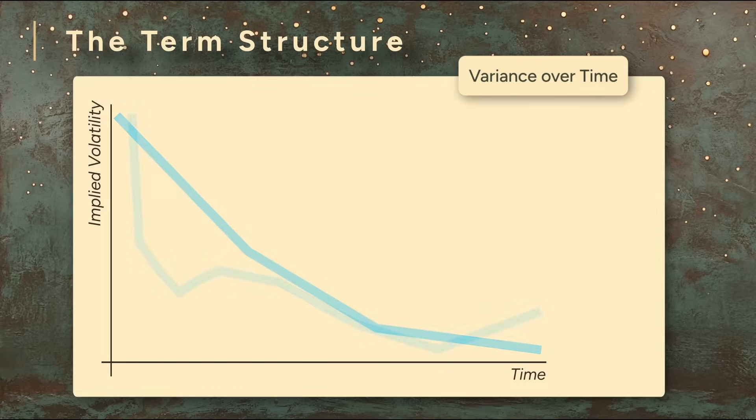And it's not always just a smooth slope. Sometimes around known future events you'll see bumps or dips in the surface. If everyone's anticipating a major announcement, the implied volatility for options expiring just after that date might spike.